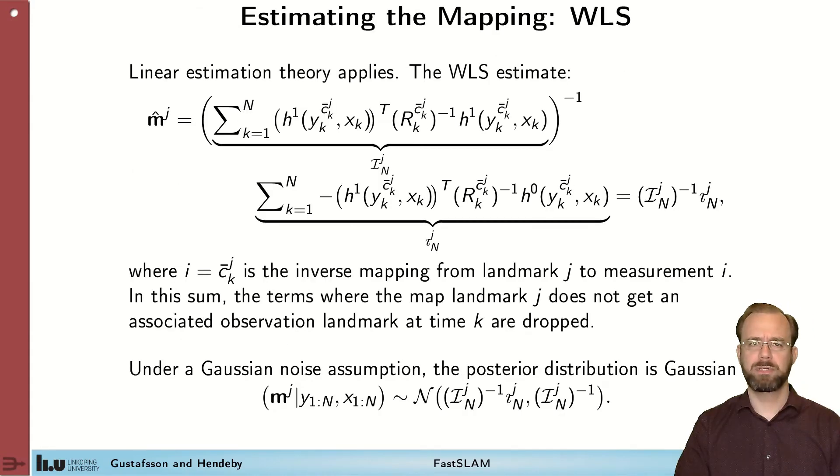As a first step in outlining the FastSLAM algorithm, we'll look at how to estimate the map. And as I said, the map components, the landmarks are independent, so we can estimate them one at a time. So we'll start by looking at how to estimate landmark J, given all the measurements that we have received of landmark J, from time k equals 1 to n. This is a linear problem, a linear batch problem, which we can then solve with the weighted least squares.